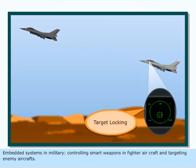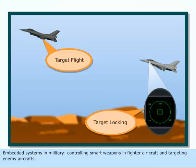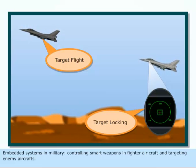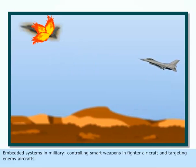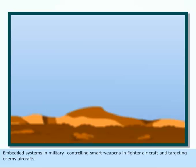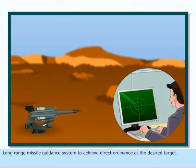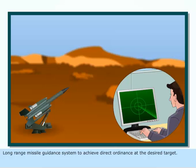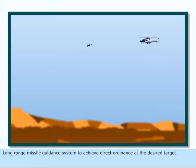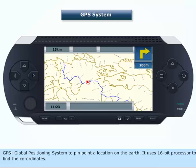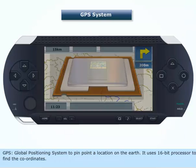Embedded systems in military: controlling smart weapons in fighter aircraft and targeting enemy aircrafts. Long range missile guidance systems are used to achieve direct ordinance at the desired target. GPS, or Global Positioning System, is used to pinpoint a location on the earth, and it uses a 16-bit processor to find the coordinates.